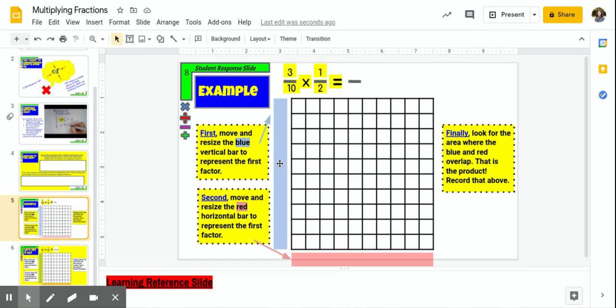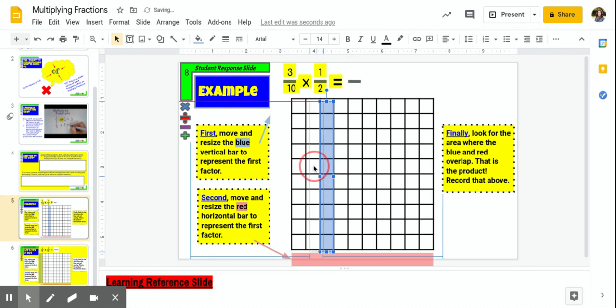The first thing that we're going to do is we are going to click on this blue rod. This blue rod, of course, I'm looking at this vertical bar. Notice that I can drag it and drop it on this grid. I am going to drag it and drop it here on the first column, but my job is to represent this first factor. This factor is 3 tenths. Well, right now I'm showing 1 tenth shaded.